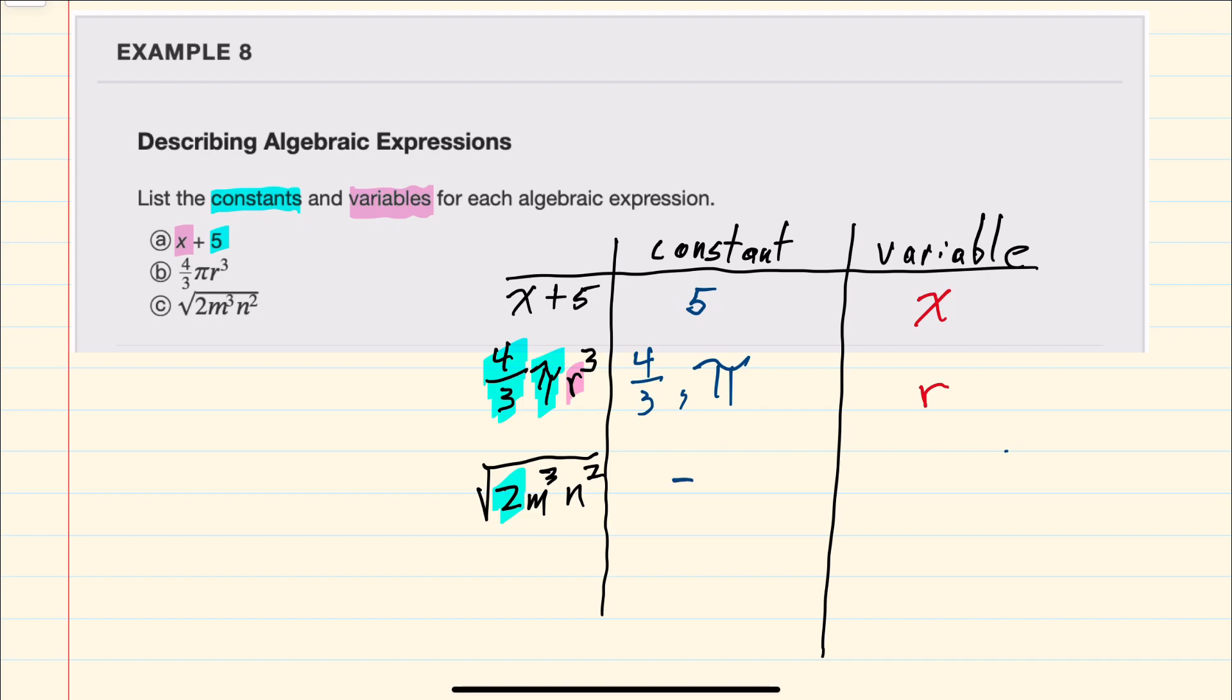And then for our last example here, the number 2 will always have the same value, but our letter variables here m and n would have different values depending on the situation.